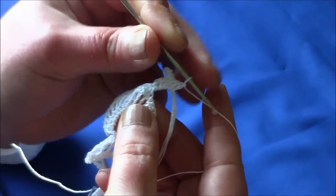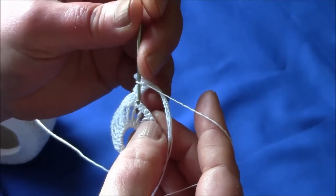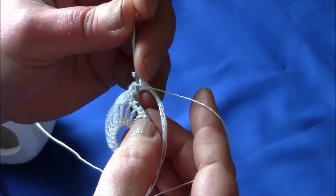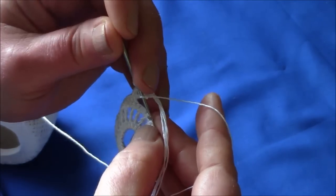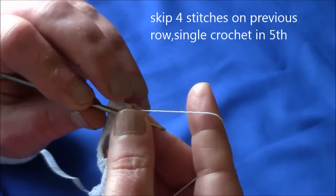So now what we're going to do is we're going to count four on the previous row, one, two, three, four and make a single crochet into the next one. So a single crochet into the fifth.